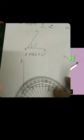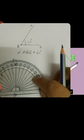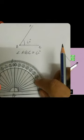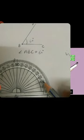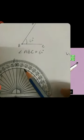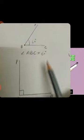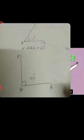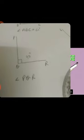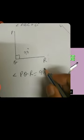Now see one more question. Here, angle P, Q, R you need to measure. Again, keep the center point on the corner of the angle. See the inner scale. Starting from 0, 10, 20, moving forward, and it reached till 90. That line is on 90, so it is the formation of a right angle, that is 90 degree. So angle P, Q, R is equal to 90 degree, and that is a right angle.